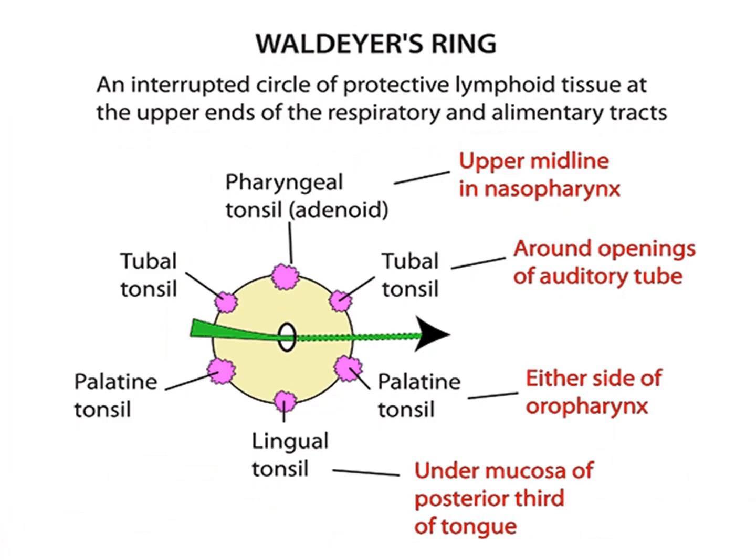These masses act as the first line of defense against microbes, as this interrupted circle of protective lymphoid tissue is present mainly at the ends of the respiratory and alimentary tract.